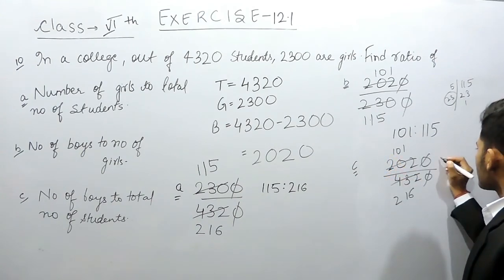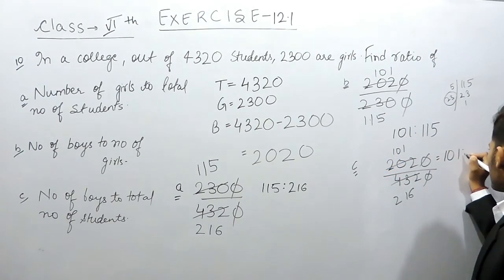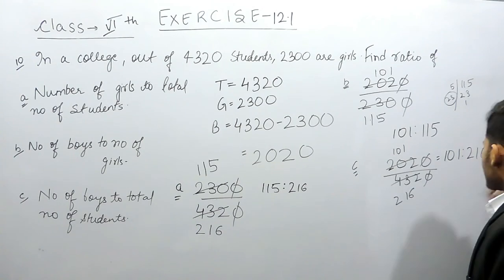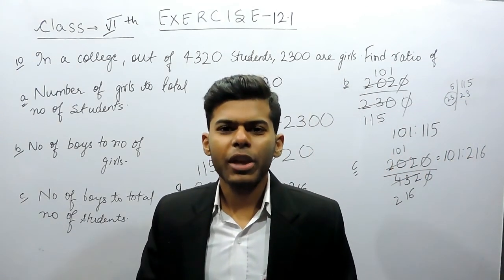Now, this cannot be cancelled. So, our answer will be 101 ratio 216. This is how you can solve this question. Thank you.